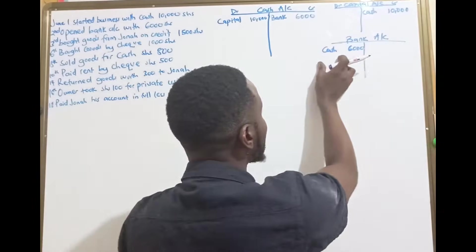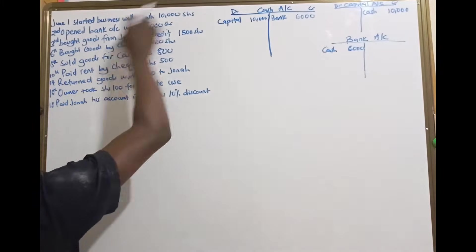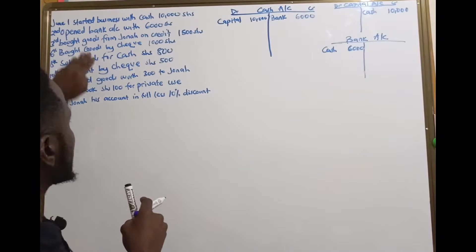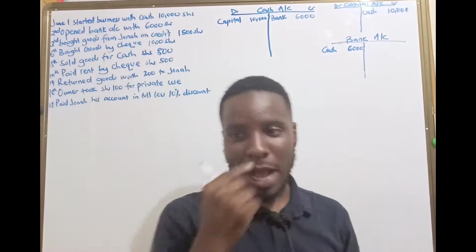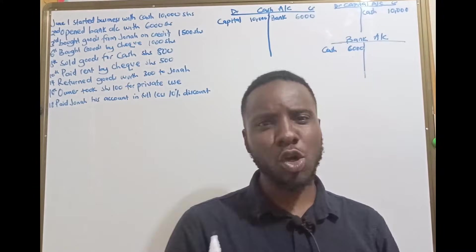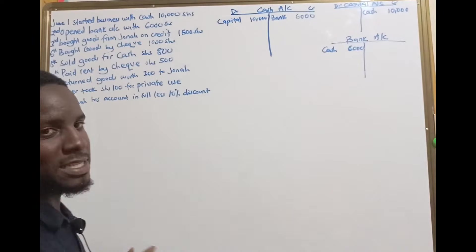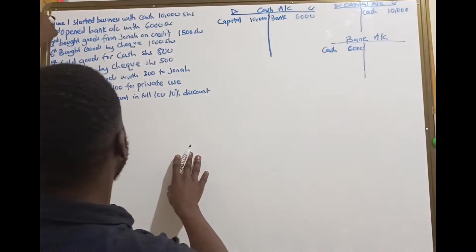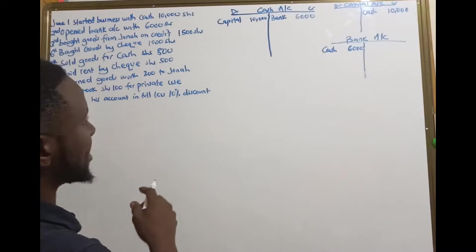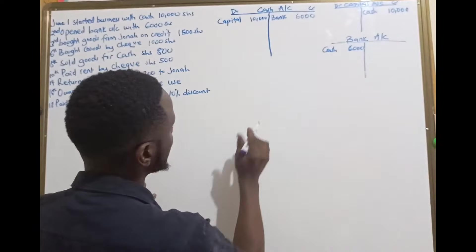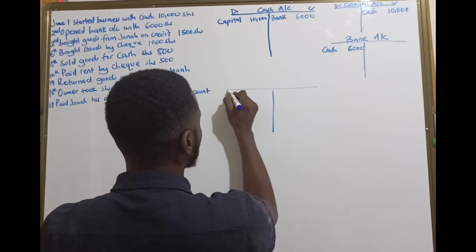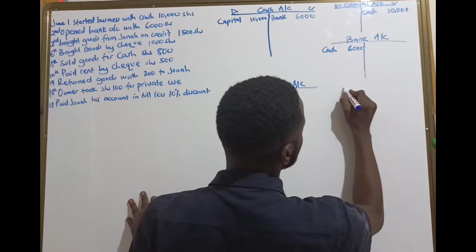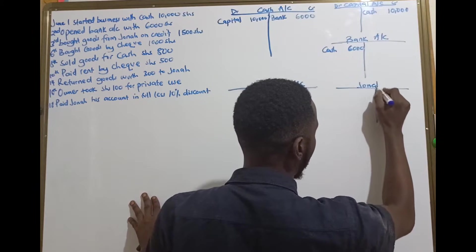The bank is receiving money, 6,000, from the cash. That means we are opening up a bank account and this is the amount of money we are using. Then they are saying bought goods from Jonah on credit. Remember we talked about personal accounts — these are accounts that record debtors and creditors of the business. We record their names and open up their accounts by name. So they are saying we bought goods from Jonah — these are purchases. So we have a purchases account and a Jonah account.